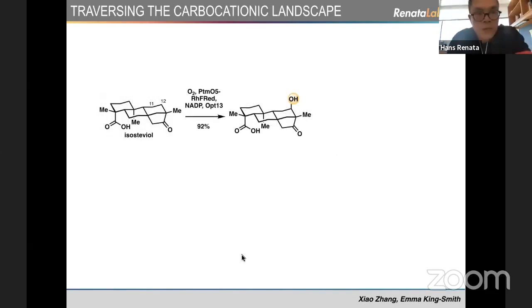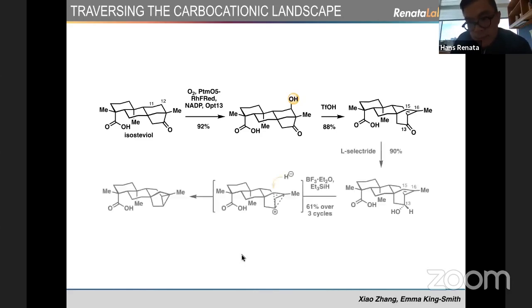This is the first lucky bounce that went our way. When we were hydroxylating isosteviol with PTM05, we found that it actually oxidized at C12 instead of C11. With this, now we have the necessary functional handle to effect the rearrangement. We can do this by treatment with triflic acid. This affects a 1,2 shift to generate an ent-atisane product. Now to cyclize the C13 and C16, we first reduced that ketone to the corresponding alcohol. We found that we can treat this with Lewis acid in the presence of silane to generate the desired ent-trachylobane product. We think that this happens through formation of a non-classical carbocation structure that is then quenched selectively by the hydride at that carbon through the ent-trachylobane product.